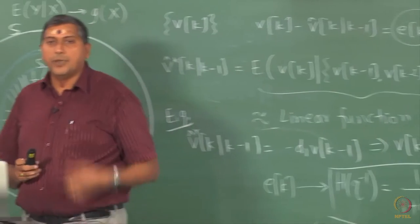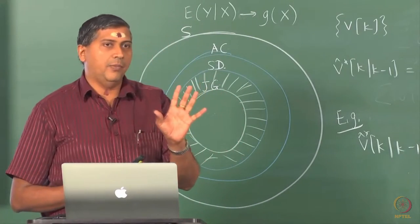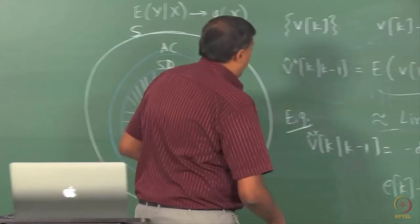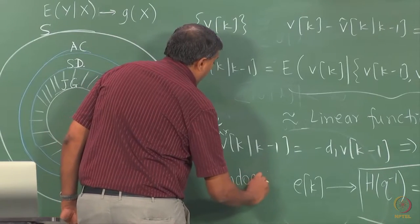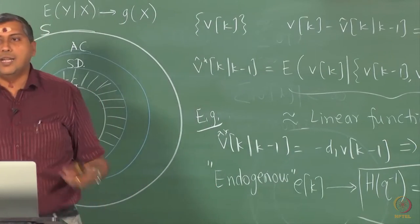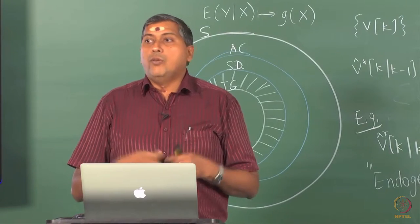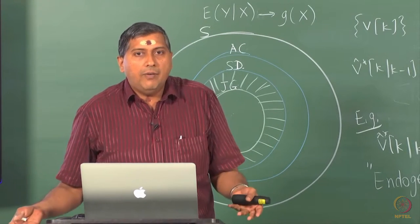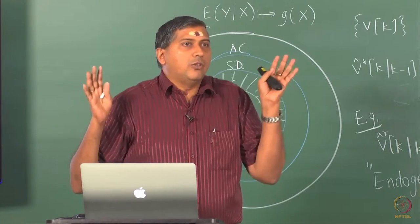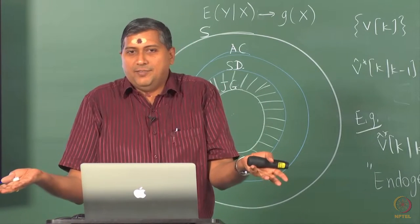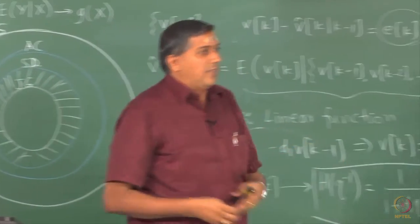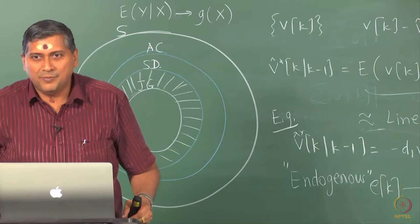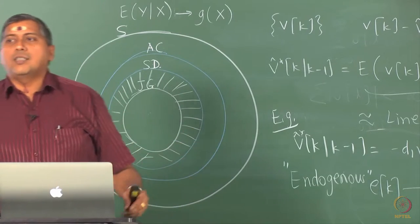Straight away you get the interpretation that white noise is the input driving v_k. It is only an interpretation, and most importantly you should remember that this white noise is endogenous. Let me write here so that you tell yourself once again that this is not an external signal — it is an internal part of v that is driving itself. We have no other choice: we are saying we do not know what caused v and yet we are supposed to build a model. The only way to explain it is that something internal is exciting this process. So, this kind of representation does make sense in a qualitative way.